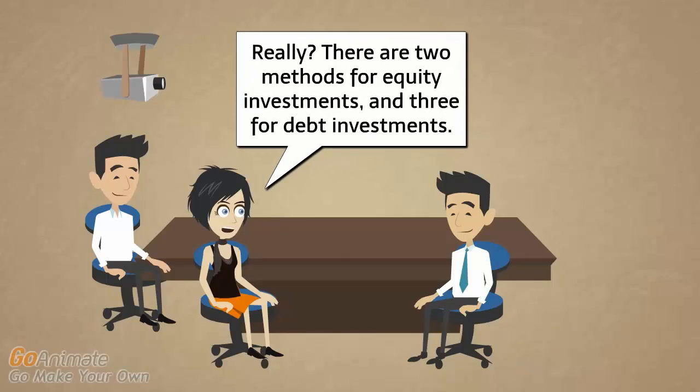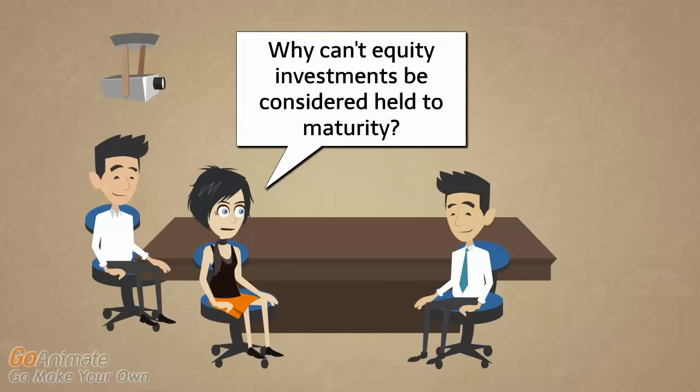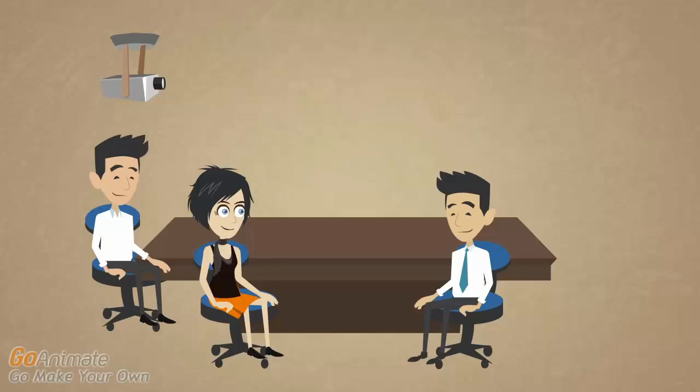There are two methods for equity investments and three for debt investments. Why can't equity investments be considered held to maturity? The simple answer is that equity does not mature. Debt securities often have a fixed maturity — you get paid back in five, ten, or thirty years — whereas equity has no fixed maturity at which you get paid back. When the FASB was developing these methods, firms demanded a third method, saying: sometimes we buy five-year bonds, we intend to hold them for five years, collect interest and then principal at the end — so who cares about fair value? The FASB agreed: as long as you're willing to hold the bond for five years, there's a third category where you don't have to mark things to market.